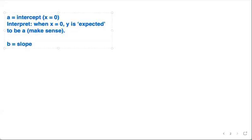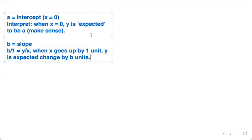b is going to be slope. The way I do slope throughout any of the stats courses I've ever worked with is if it's b, put it over one, make it y over x, and then say when x goes up by one unit, y is expected to change by b units. Something to that effect.